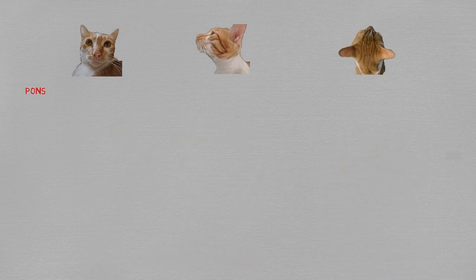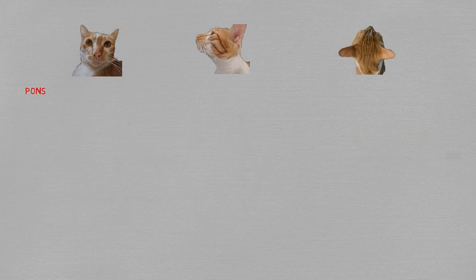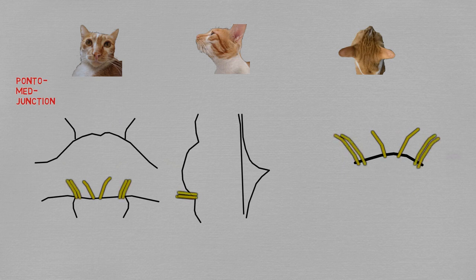Pair number five exits directly through the pons — no difficulty here. From the pontomedullary junction emerge pairs six, seven, and eight. Pair six is the most medial, and pairs seven and eight leave almost hand in hand, a little bit more laterally.